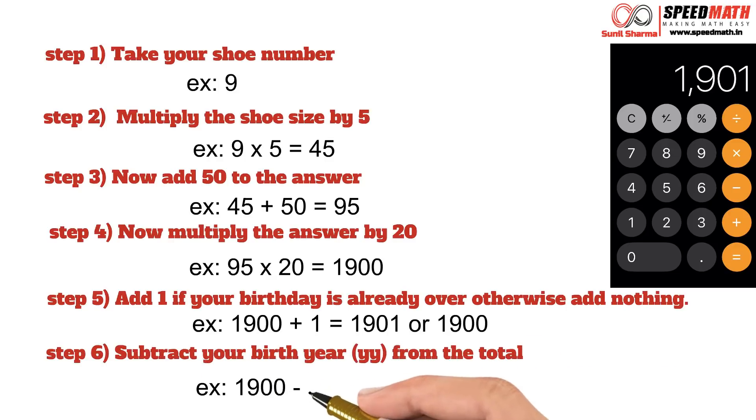You need to subtract your birth year in the format yy from the total. For an example, let's consider you're born in 1995. So I'm going to take the last two digit of 1995 which is 95 and I'm going to subtract it from the total.